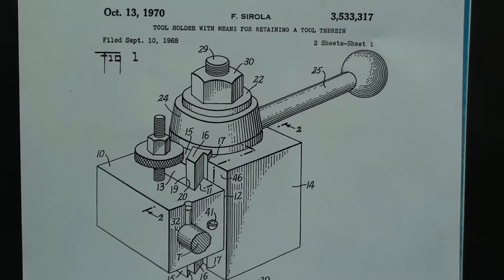Real brief history here. In 1970, Frank Sirola patented the quick change tool post, and he named it after his own name spelled backwards. So, Sirola backwards is Loras. I've said that in many other videos.